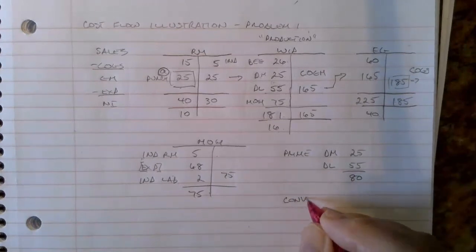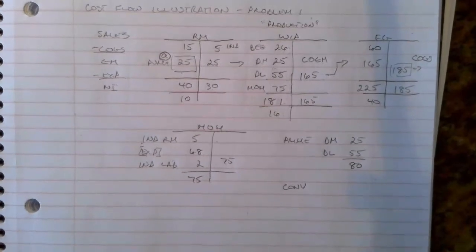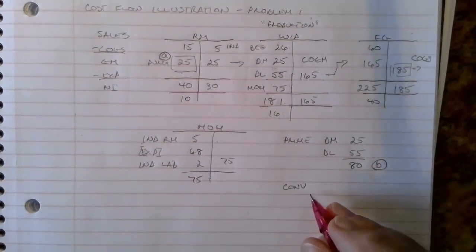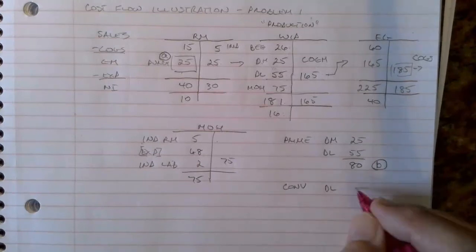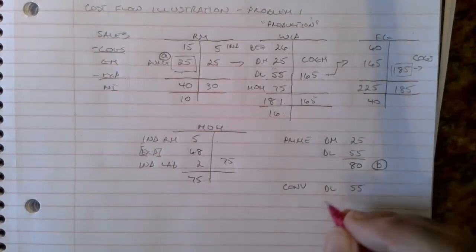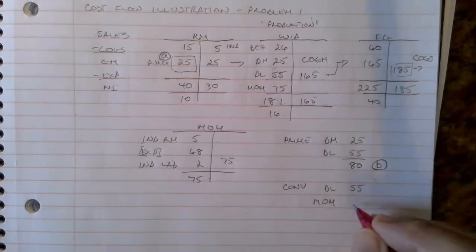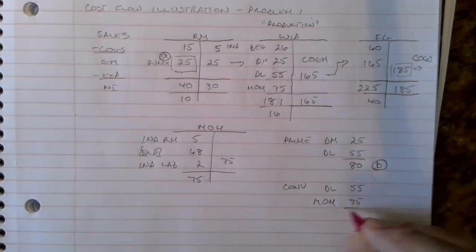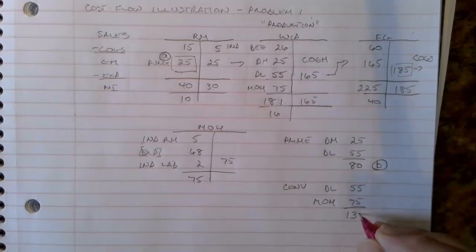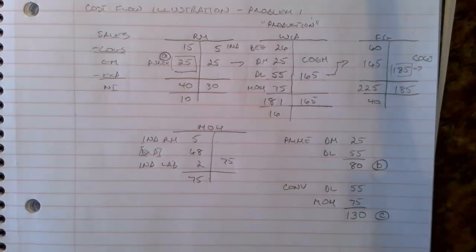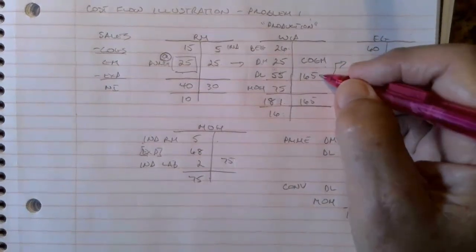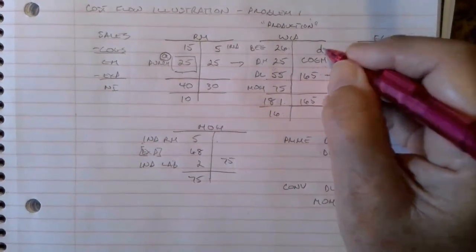What was the conversion cost? Conversion costs are direct labor, direct labor is fifty-five. Manufacturing overhead, manufacturing overhead was seventy-five. So that's a total of one thirty. That's C. Cost of goods manufactured, here's cost of goods manufactured right there in the work in process T account. So that is D. And cost of goods sold, cost of goods sold is one eighty-five right in the finished goods account. That is E.